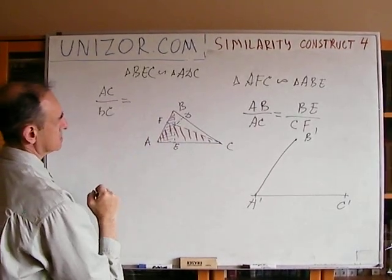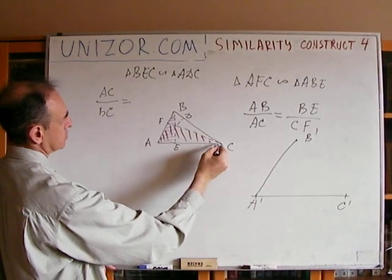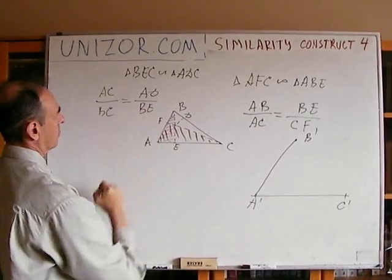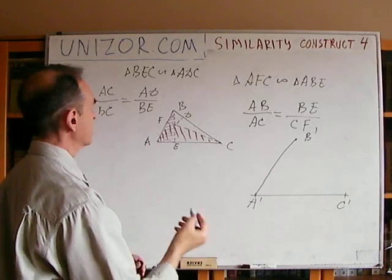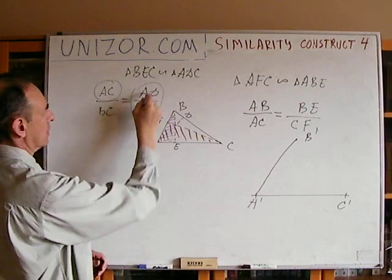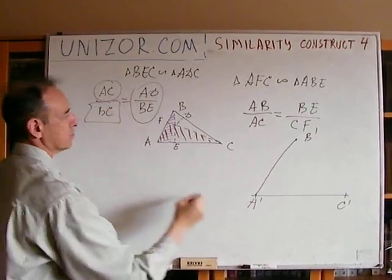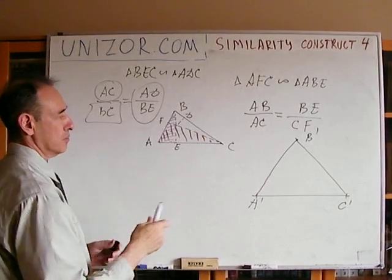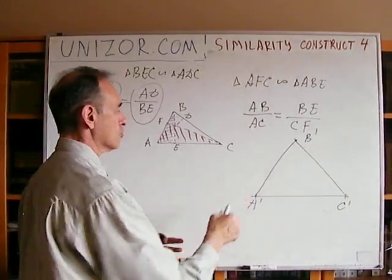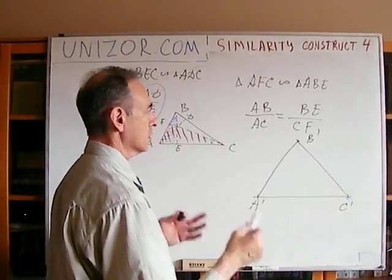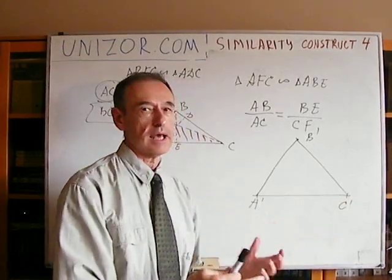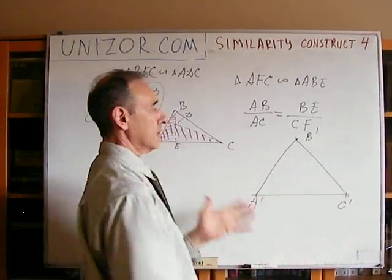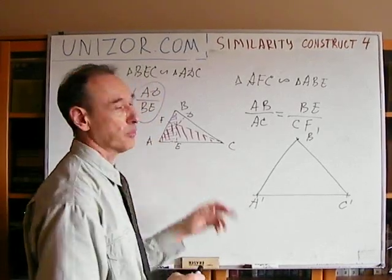So, from the proportionality between sides and altitudes, I can build a triangle similar to the one I need. I fix one particular side and using proportionality I find the other two sides. I have built a triangle which is similar to mine.